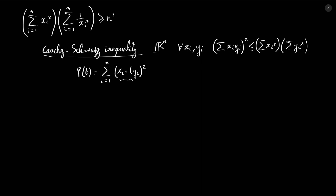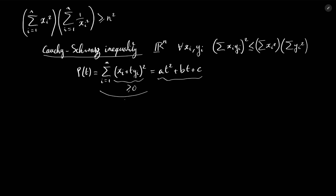The reason why p is a polynomial is because it's a sum of the square of a polynomial of degree 1, namely xi + t·yi. So p is a polynomial of degree 2 — a quadratic polynomial — that can also be written as at² + bt + c. Another thing we can notice about p is that it's a sum of elements each greater than 0, because it's defined as a square, and therefore the sum overall is also greater than 0.